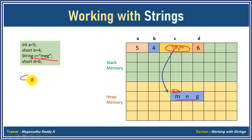Now when I change c = "megnath", somewhere in the heap memory it will recreate — it will create "megnath" at a new location. Let's say address 1005. That new address will be stored in c. That's why strings are called immutable. Immutable means you cannot change in the same location — every time you reassign a string value, it'll be created at a new location.